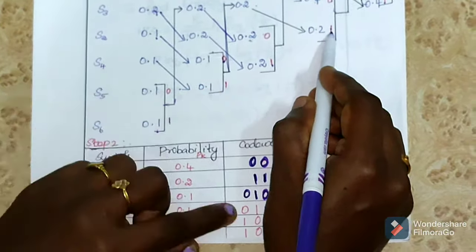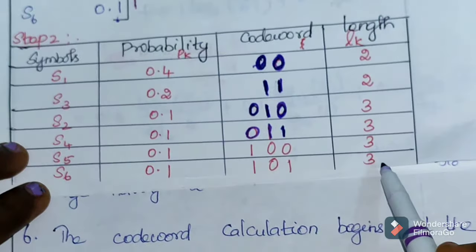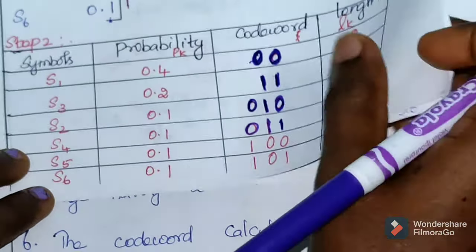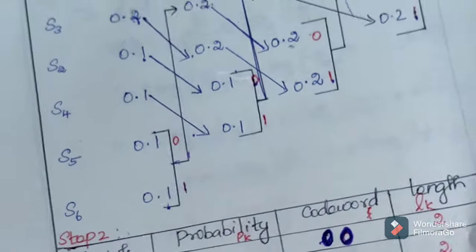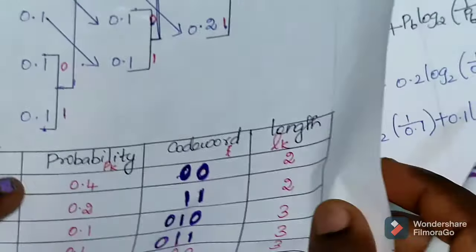Actually we have a procedure. The codeword calculation begins at the last reduction stage to the first reduction stage. We follow this procedure: firstly calculate the first codeword, then the next codeword. The length is the number of bits.